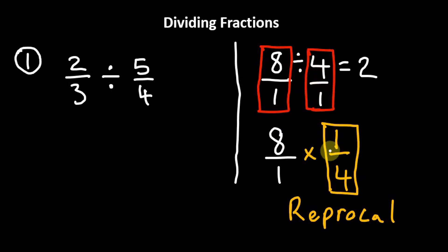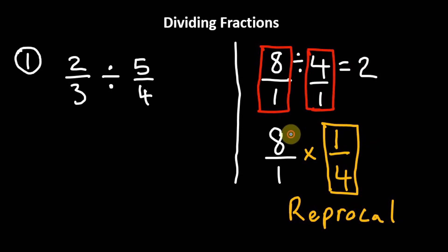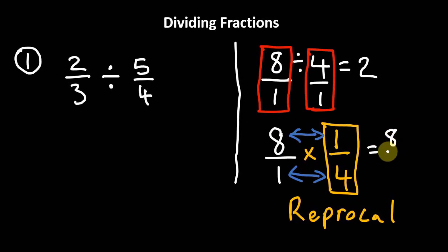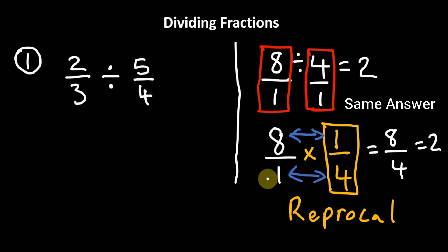The reciprocal is just a cool way of saying that we flip the fraction. So dividing by 4 divided by 1 is the same thing as multiplying by its reciprocal. When multiplying fractions, we multiply the numerators together and the denominators together. So we get 8 times 1, which is 8, divided by 1 times 4, which is 4. And 4 goes into 8 two times — so we still get 2.